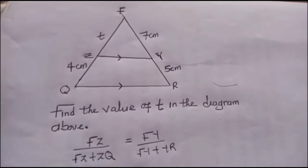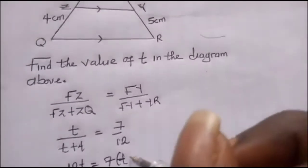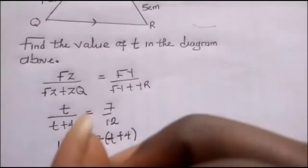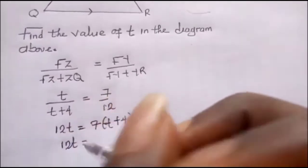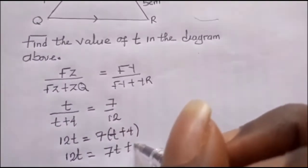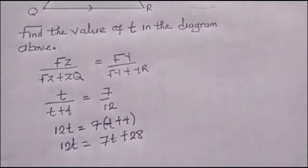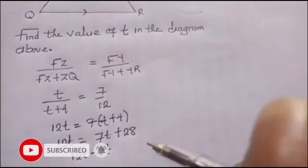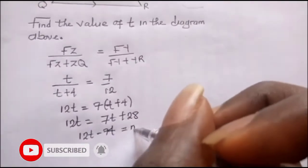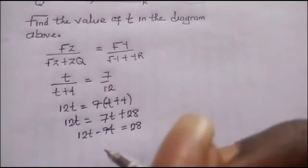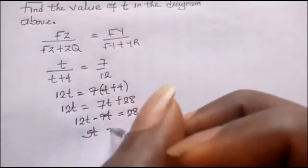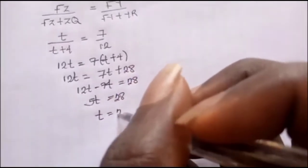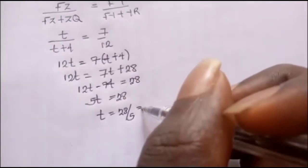So we have 12t equal to 7t plus 28. So right here I'll be having 12t minus 7t equals 28, so 5t equals 28. So t gives us 28 over 5 which will be equal to 5.6 centimeters.